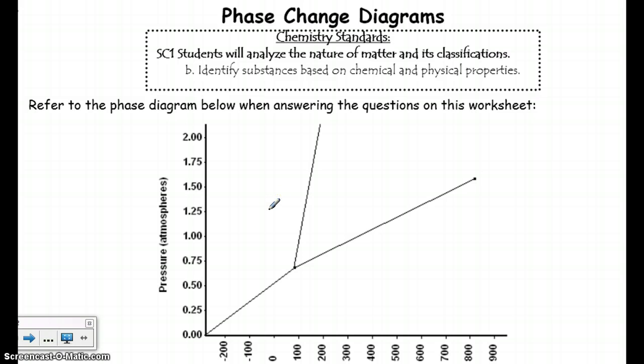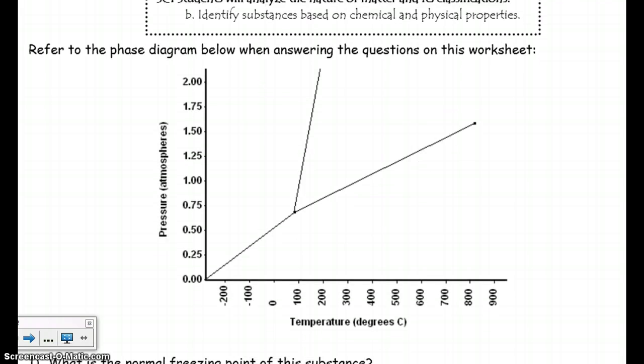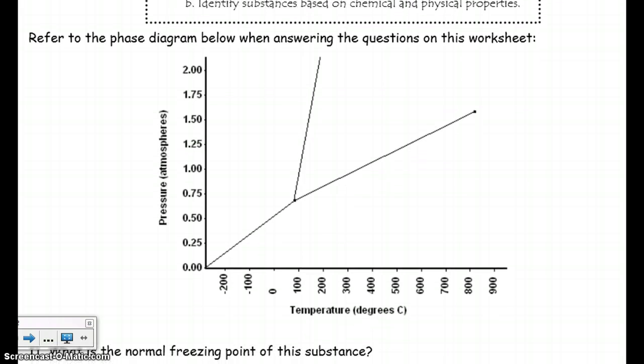So I'm going to move the screen just a little bit so we can see everything on this diagram. All right, so the first thing that you need to be aware of is that on this diagram right here, we have no states of matter, so we need to first get our states of matter on the graph.